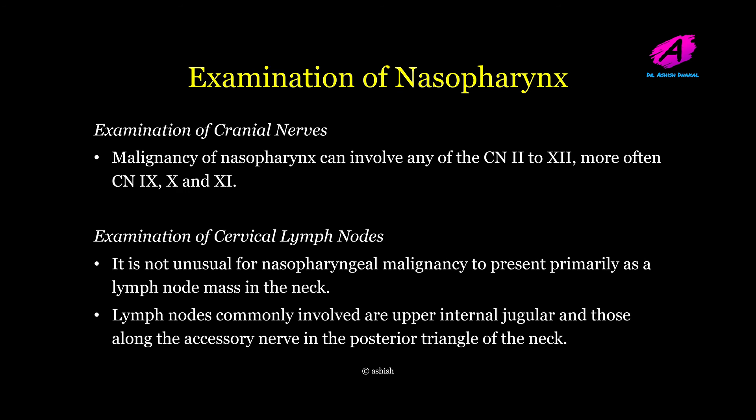Examination of cranial nerves: in cases of nasopharyngeal malignancy, any cranial nerve from the second to the twelfth may be involved, more often the 9th, 10th, and 11th cranial nerves. The function of these cranial nerves should be examined. Examination of cervical lymph nodes: it is not uncommon for nasopharyngeal malignancy to present primarily as a lymph node mass in the neck. Lymph nodes commonly involved are the upper internal jugular nodes and those along the accessory nerve in the posterior triangle of the neck. Thank you for listening.